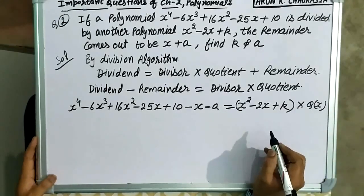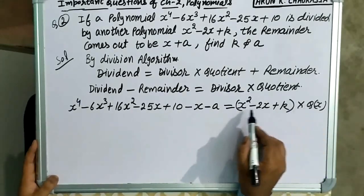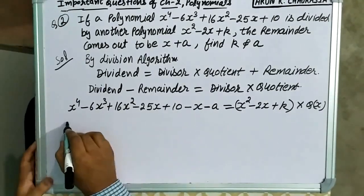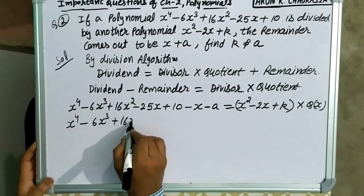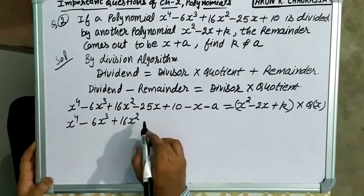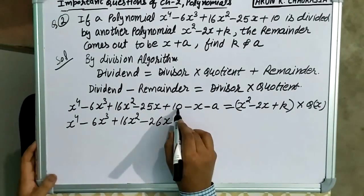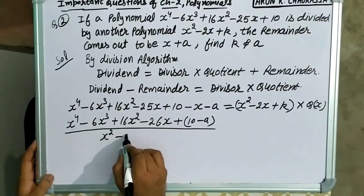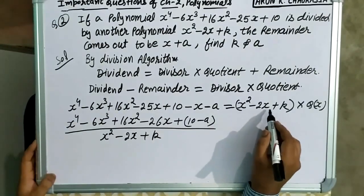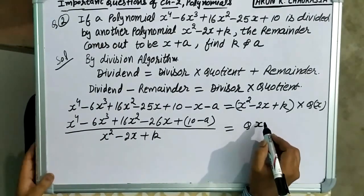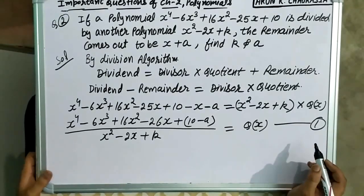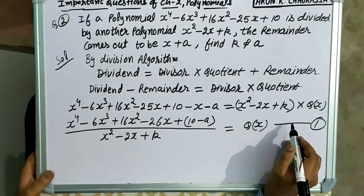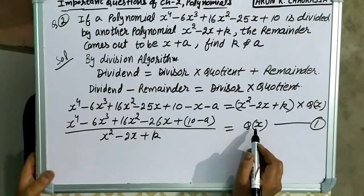Quotient यहाँ पर q(x) मान लेते हैं. ये दोनों multiply में हैं, तो ये degree 2 की polynomial जो divisor है, इस तरफ आकर इसको divide करेगा. इस तरफ minus 25x minus x यानि minus 26x, और 10 minus a constant term बन जाएगी. यह result 1 है — इसमें ये polynomial इस polynomial से divide हो रही है, जिसमें remainder अब 0 होगा.